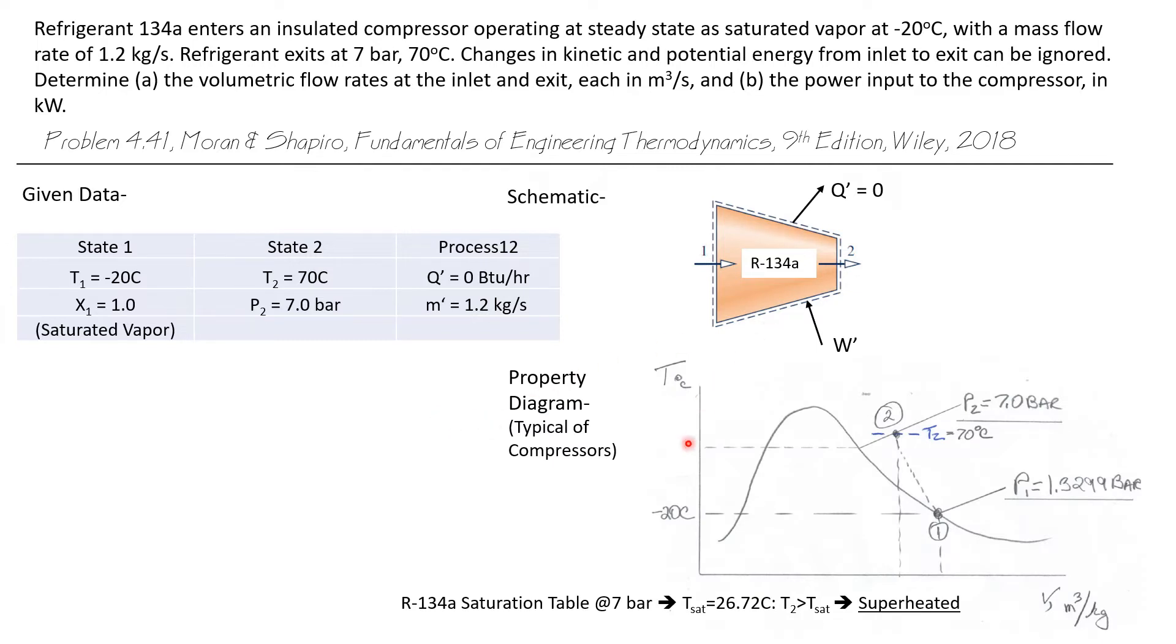Let's draw a T-V diagram for this. We've got a refrigerant, and so we're going to draw a vapor dome here. And we know that state one was saturated vapor at minus 20 degrees C.